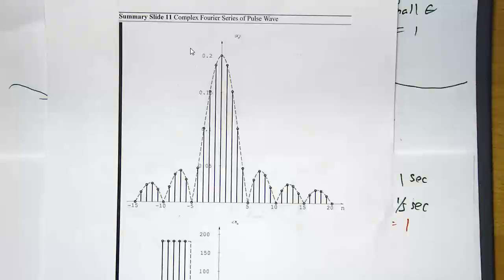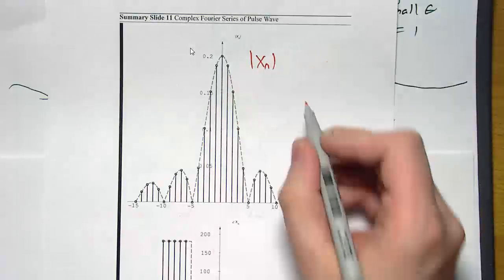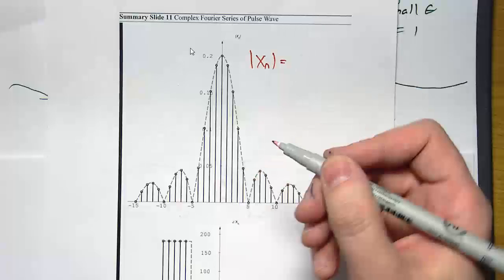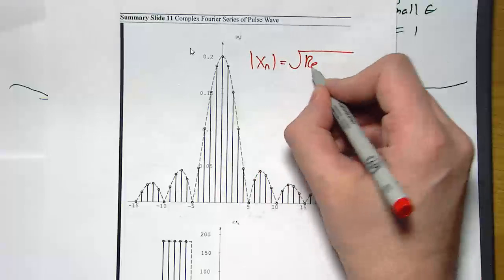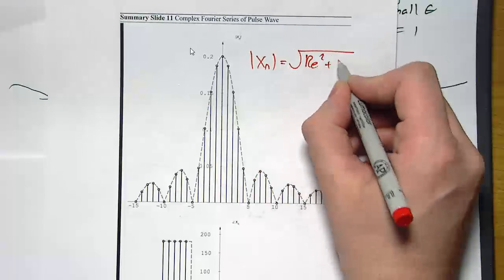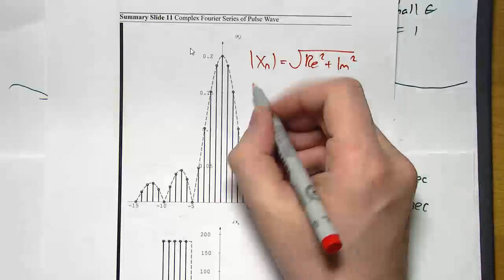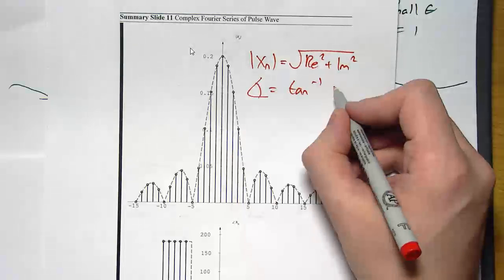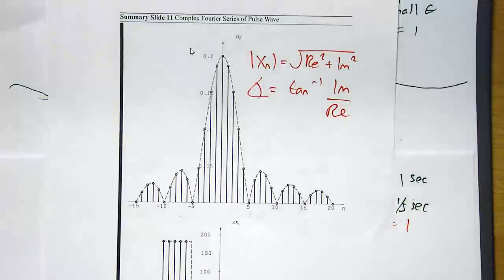In general, if you're trying to plot the magnitude of x of n — that's going to be a complex number — it's going to be the square root of the real part squared plus the imaginary part squared. But now we have to plot the phase. The phase is the inverse tan of the imaginary part over the real part.